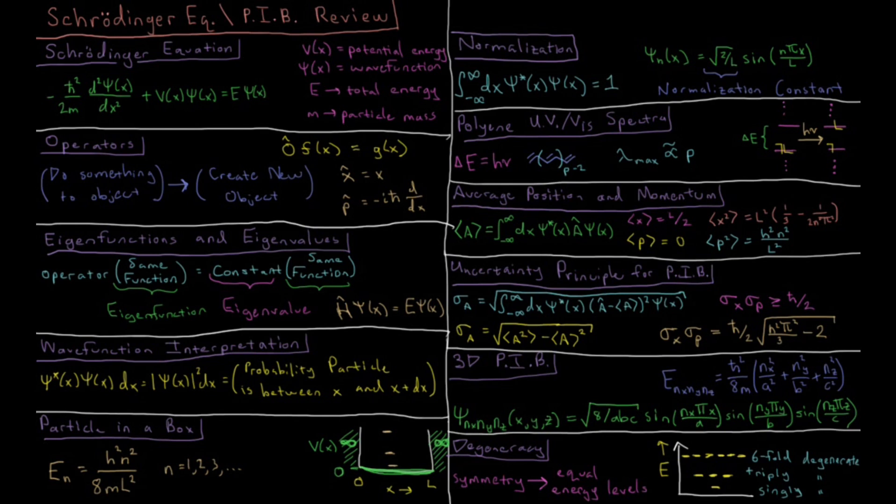This video is a review of the chapter on the Schrödinger equation and the particle-in-a-box model system. The Schrödinger equation is minus h-bar squared over 2 times mass of a particle, times second derivative of the wave function psi of x with respect to spatial position x, if it's just a function of x.